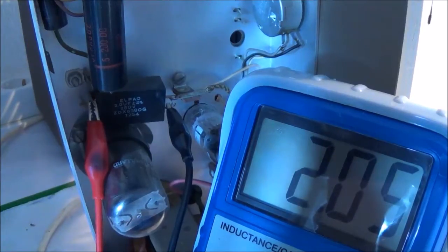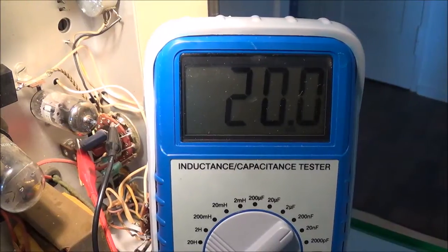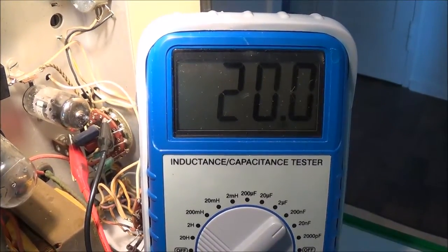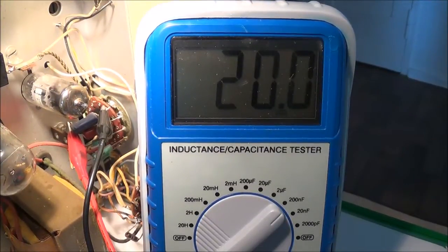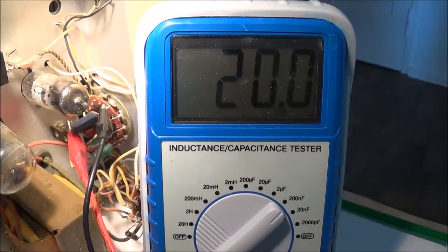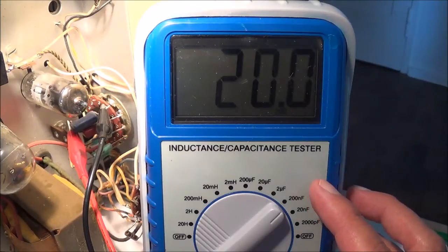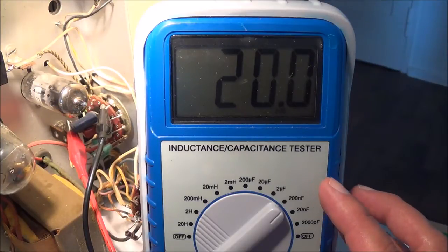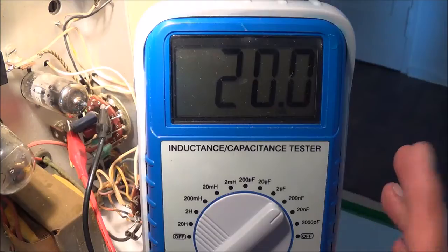Now I'm checking the 0.02 microfarad capacitor, which is 20 nanofarads. According to my capacitor checker here it's basically right on the money. Of course the tolerance of this unit, this capacitor checker, is supposedly 2.5%, so again everything is a little ballpark here, but I think I'm gonna go ahead and leave this capacitor in there.